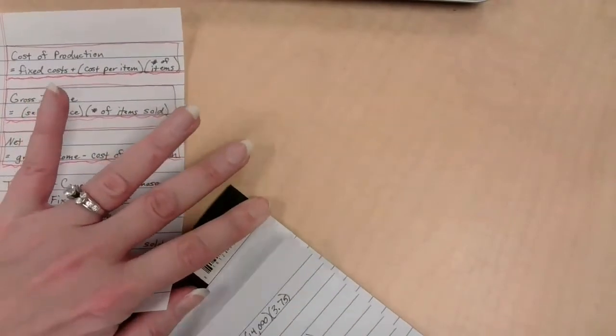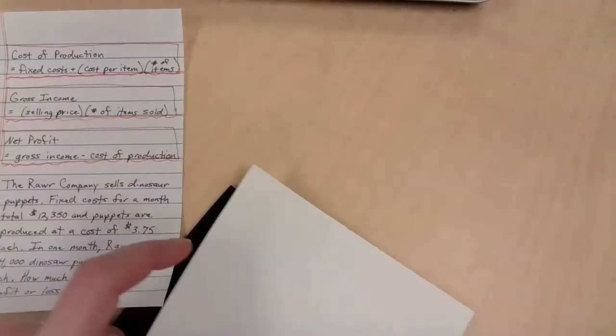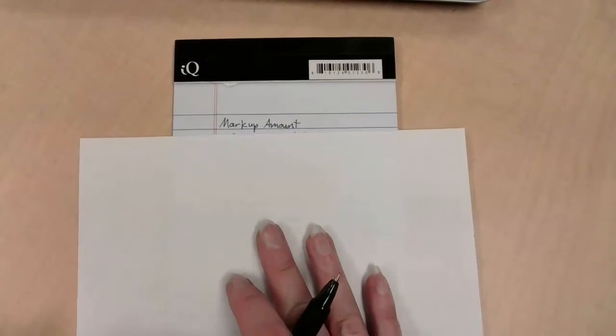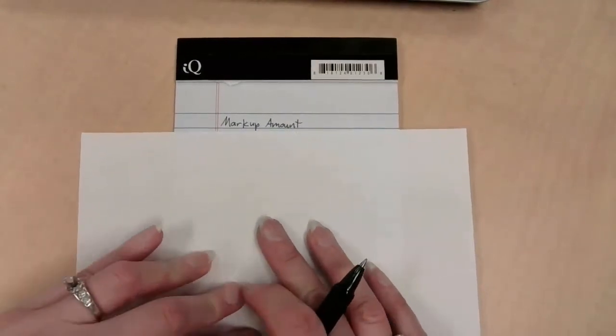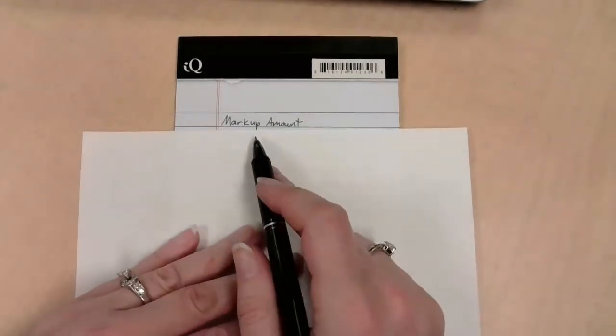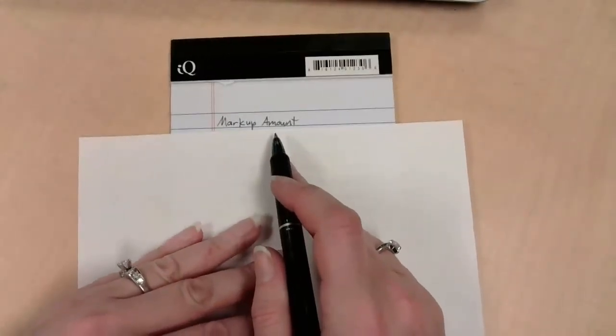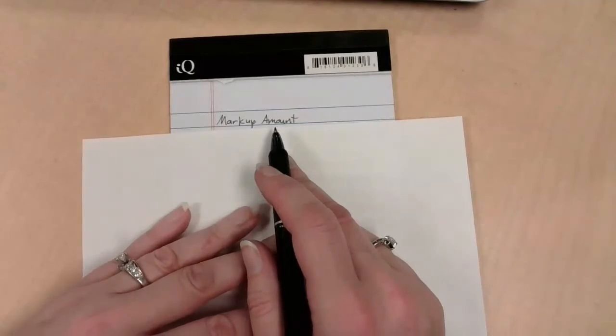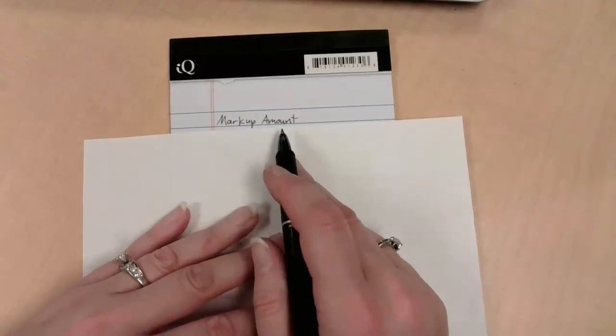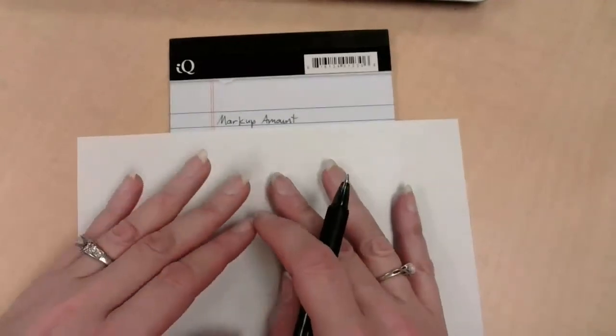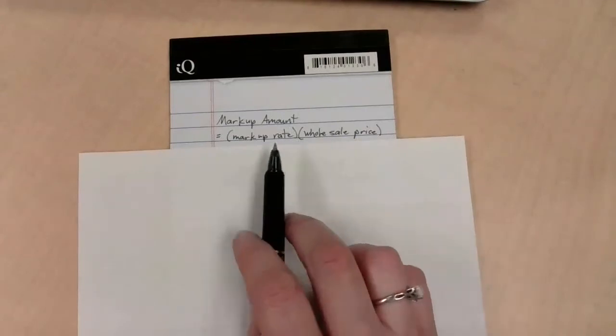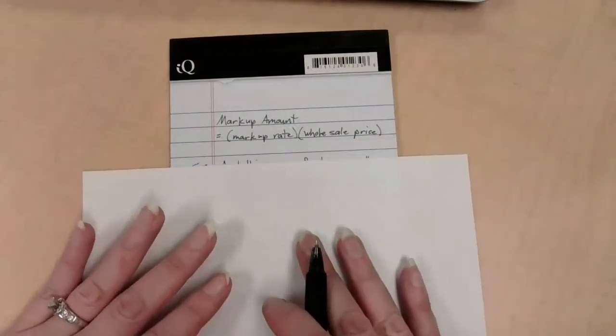And then last up for today, the last thing I want to look at here is markup amount. You make something, if you don't make it and also sell it, chances are you make it and somebody else sells it. Well, they have to get their money too, and so there's a certain amount of markup that occurs in most things unless you manage to buy wholesale. Wholesale means you can essentially buy it straight from the factory and there's no extra markup amount in the price. It's just the pure price. So, we need to do the markup rate. This is going to be a rate, a percentage, times the wholesale price. Coming from the manufacturer, what is the markup rate? That'll give us the markup amount.